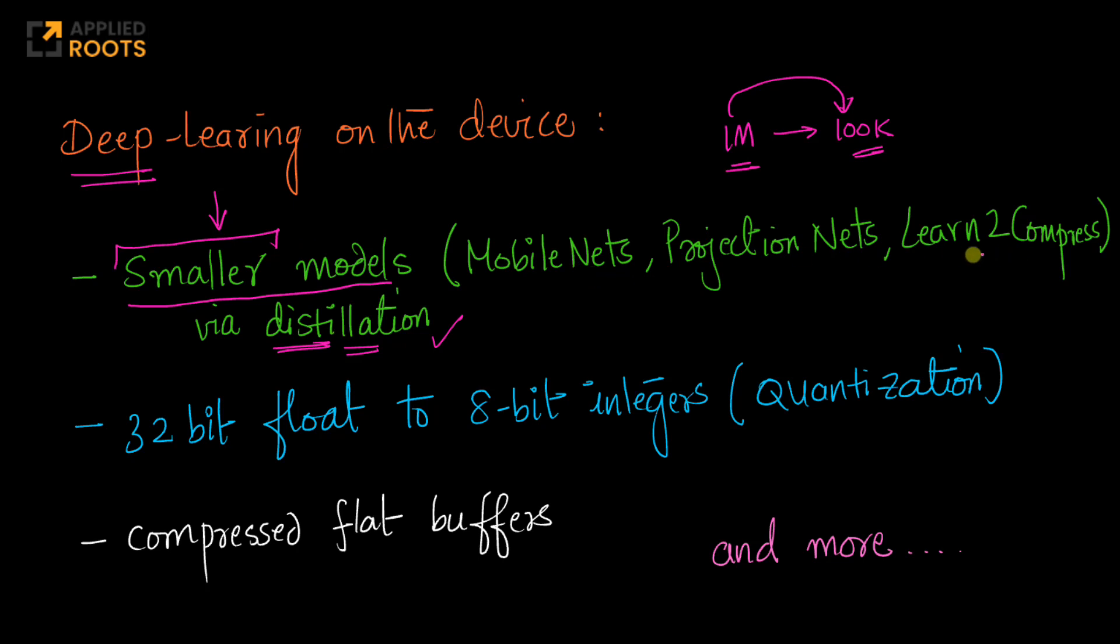There are a bunch of research papers and research strategies like mobile nets, projection nets, even strategies which are just a couple of years old, like learn to compress. These are all research papers and research work done at companies like Google. This is like learn to compress, if I'm not wrong, is research work from 2018, 2019.